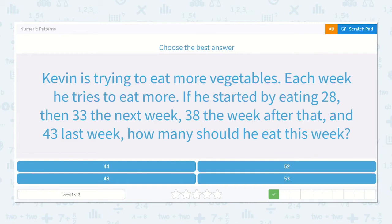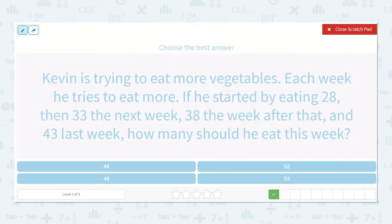Kevin is trying to eat more vegetables. Each week he tries to eat more. If he started by eating 28, then 33 the next week, 38 the week after that, and 43 the last week, how many should he eat this week? We have 28 to 33 to 38 to 43, and then our missing number.